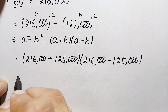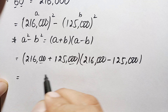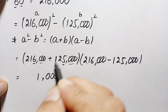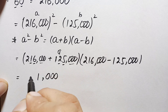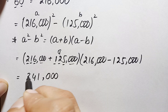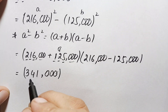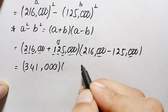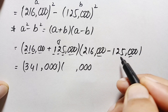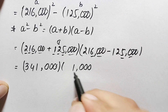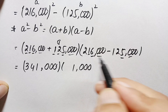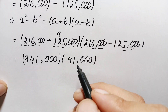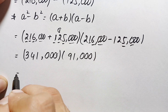Let's add and subtract these two numbers. Adding 216,000 plus 125,000: 5 plus 6 is 11, carry 1; 2 plus 1 is 3 plus 1 carried is 4; 1 plus 2 is 3. So the addition gives 341,000. Subtracting 216,000 minus 125,000: 6 minus 5 is 1; 1 minus 2 requires borrowing, giving 21 minus 12 equals 9. So the subtraction gives 91,000.